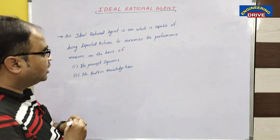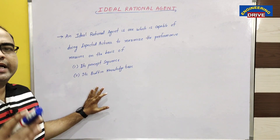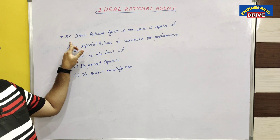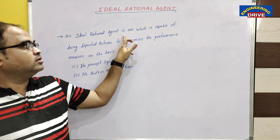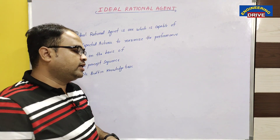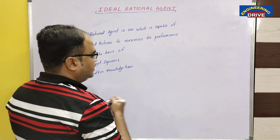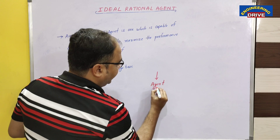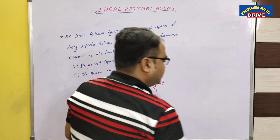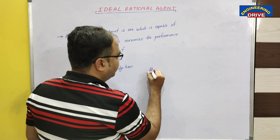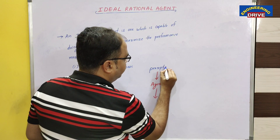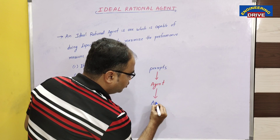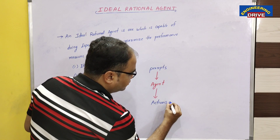So dear students, I have written this definition first to give a clear picture of which agent is known as an ideal rational agent. You can see here this definition. An ideal rational agent is one which is capable of doing expected actions. We know that an agent will take one input and generate one output. The agent will perceive the environment, taking percepts as input, and once the percepts have been taken as input, the agent will generate actions as output.